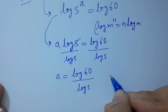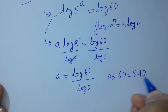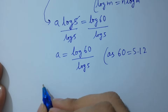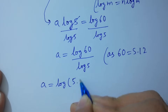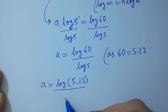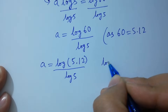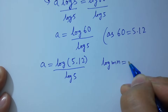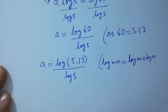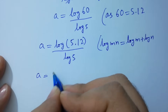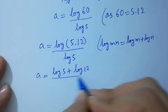As 60 equals 5 times 12, a equals log(5 times 12) over log 5. Using the rule log(mn) equals log m plus log n, we get a equals (log 5 plus log 12) over log 5.